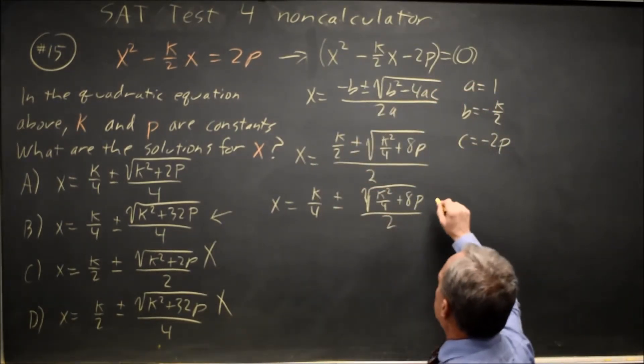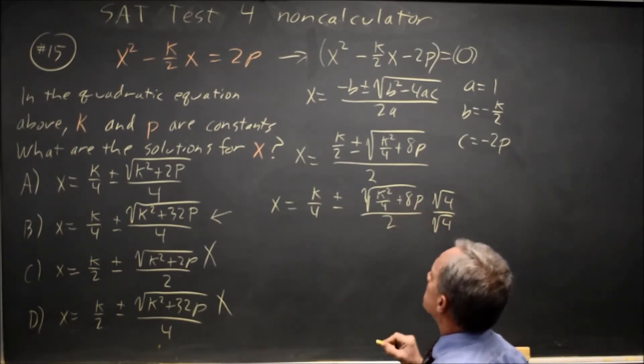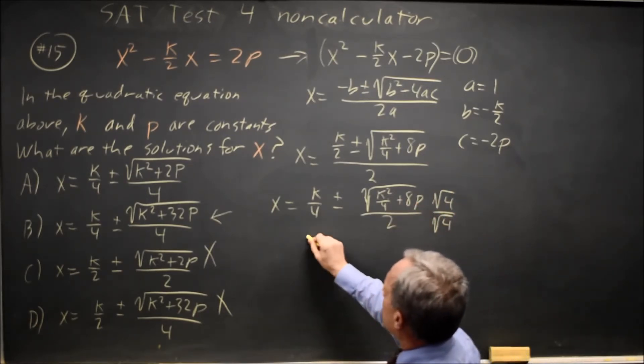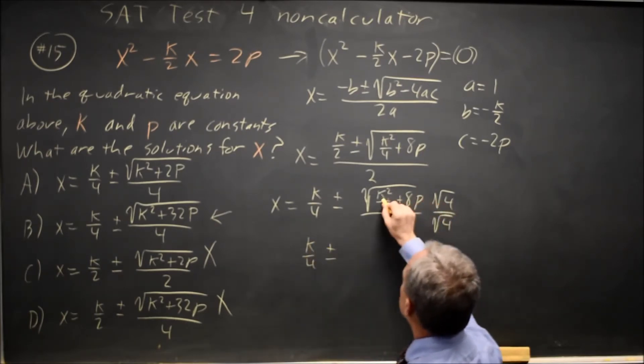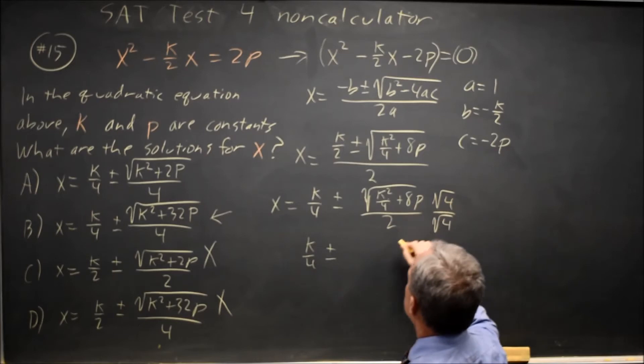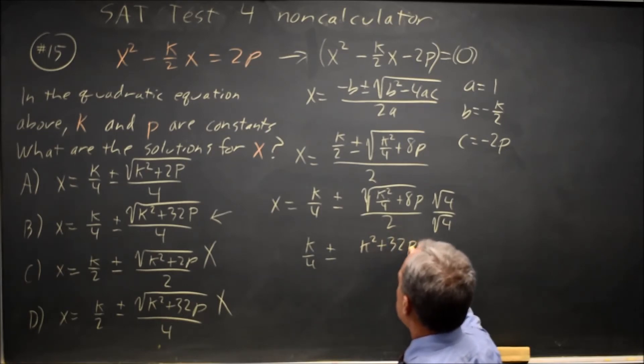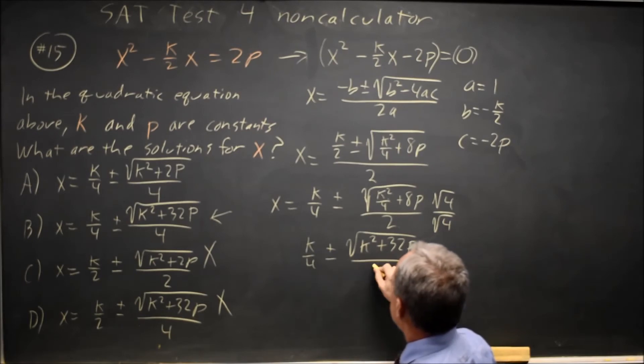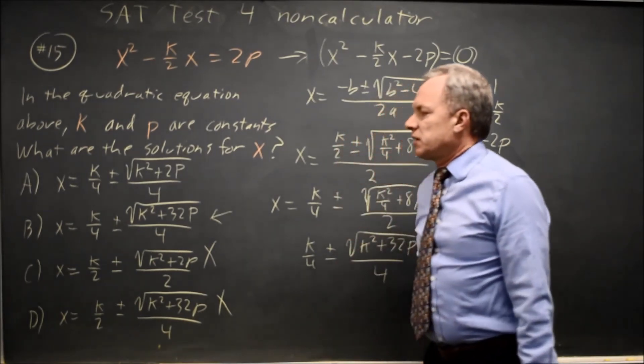If I multiply that by root 4 over itself to get rid of the fraction inside the square root, I have k over 4 plus or minus root k squared over 4 plus 8p. Times root 4 is the square root of, I can bring the 4 inside and distribute it, k squared plus 32p. Twice root 4 is 2 times 2 is 4, same answer I got before, a little bit uglier on the algebra.